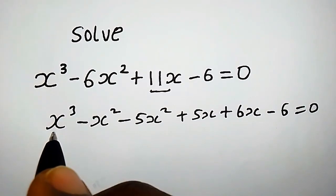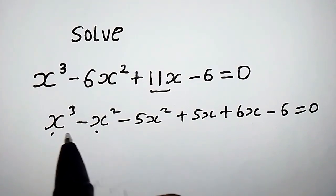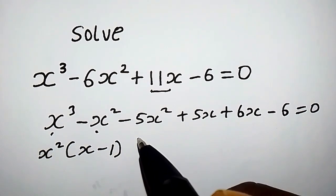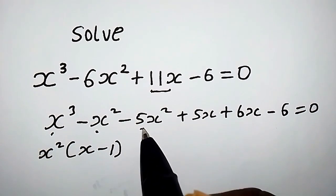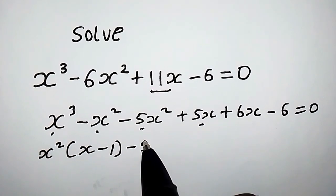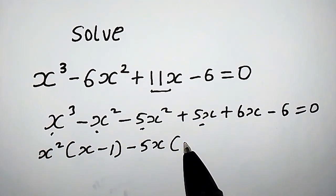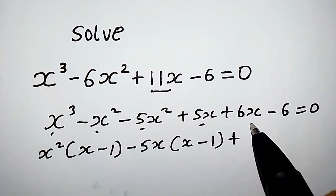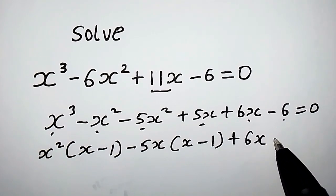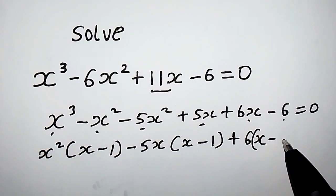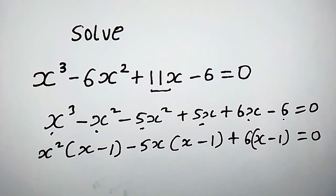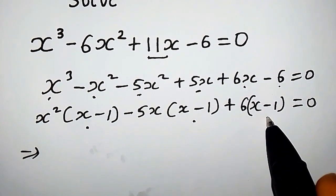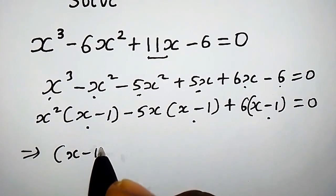Now let's pull out the common terms. For the first two terms, x squared is common, so we get x squared into x minus 1. Likewise, minus 5x is the common term, giving minus 5x into x minus 1. And 6 is common here, giving 6 into x minus 1, equals 0.